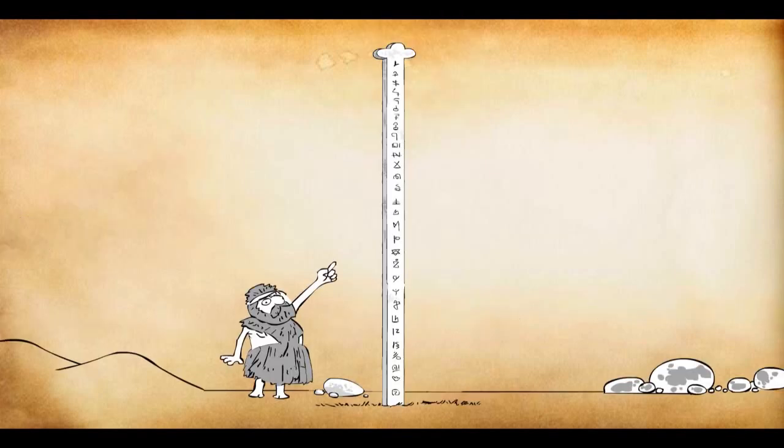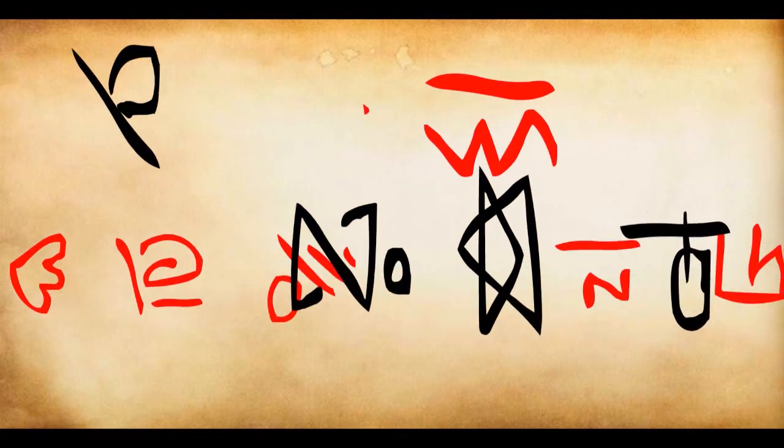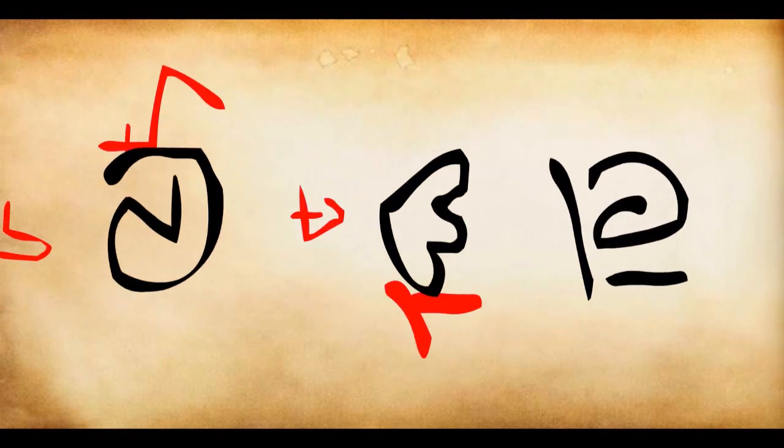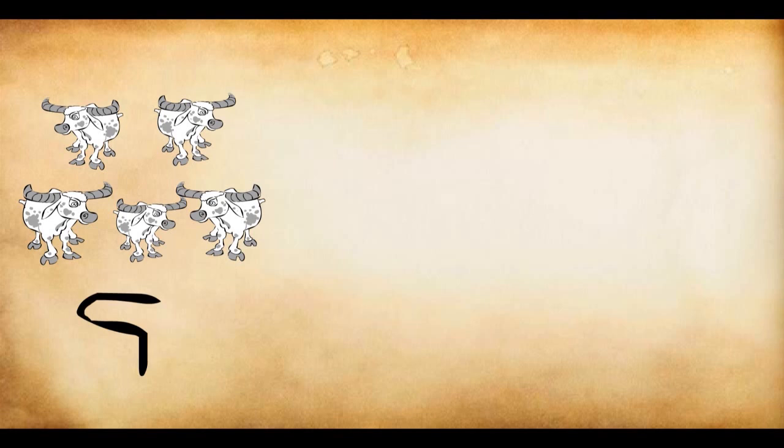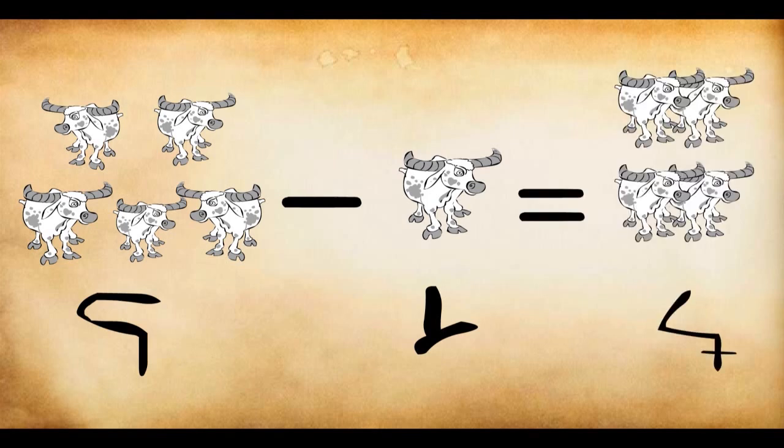There were a lot of problems with this number system. Though they had come up with 30 symbols and names but it was extremely difficult to memorize them. Not just this, mathematics was becoming really difficult. For instance, if you had Bam cows and someone took away Tim cows from you, then you would be left with Plop cows. Now it would take so many years for anyone to memorize all the different combinations of these 30 symbols.